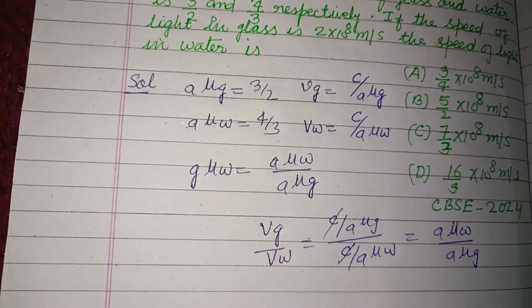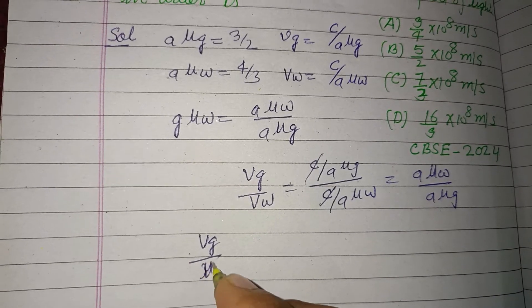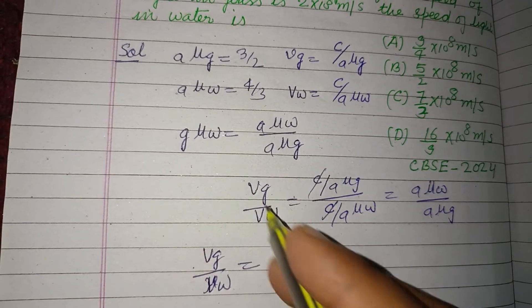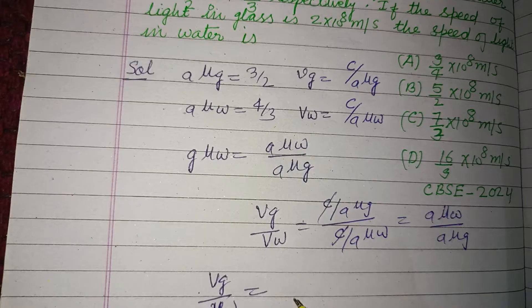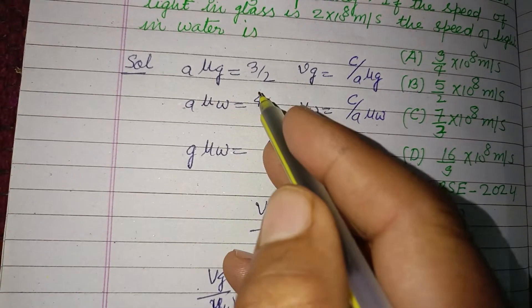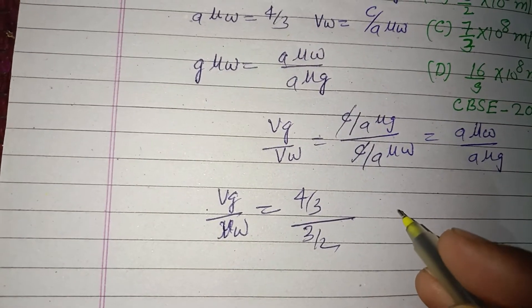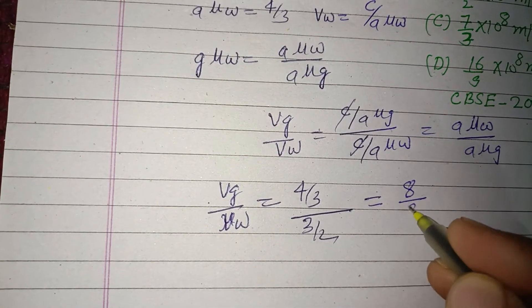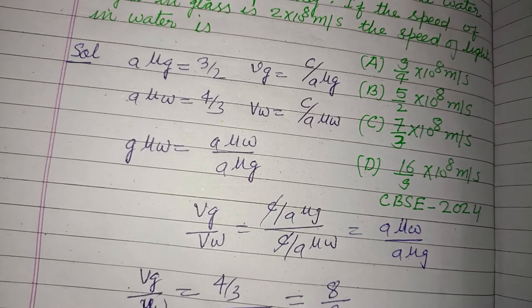And this is what vg over vw equal to a mu w is 4 by 3 and a mu g is 3 by 2. So we got it 8 over 9.